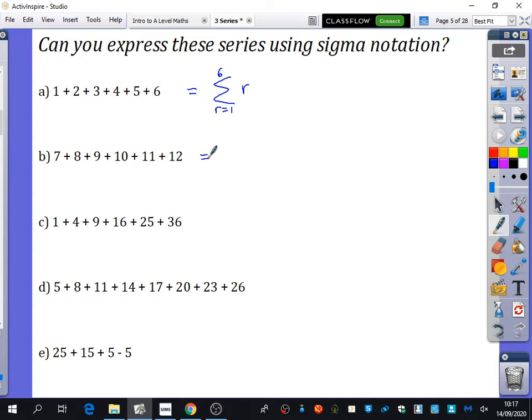Marco, what did you get for this second one here? Six on top, r equals one on the bottom, and then in the brackets r plus six. This one obviously does require brackets.